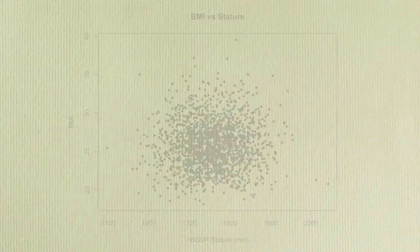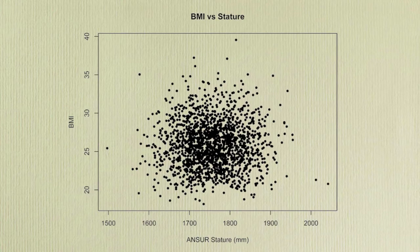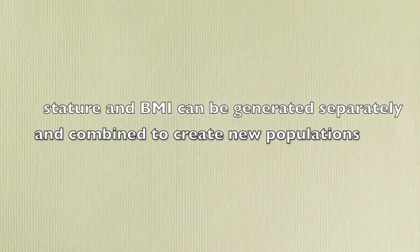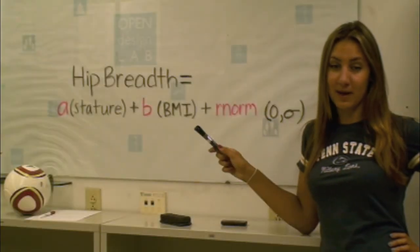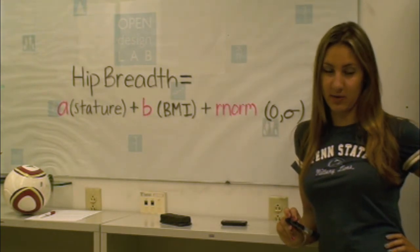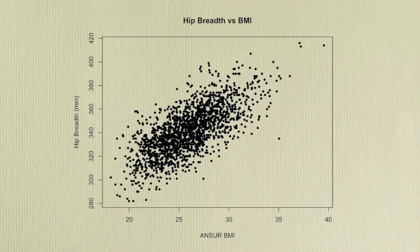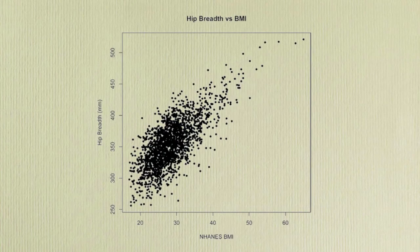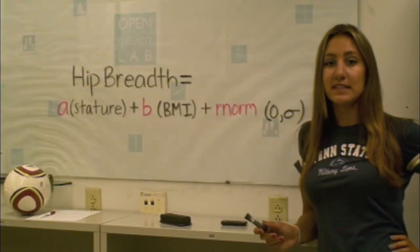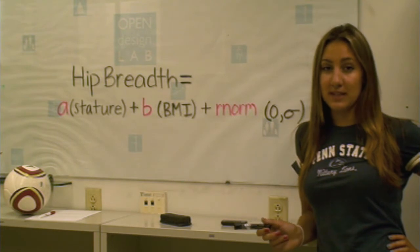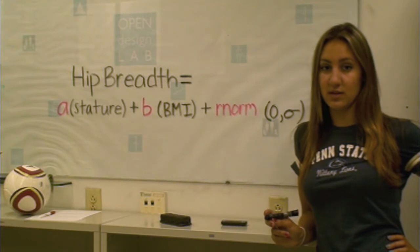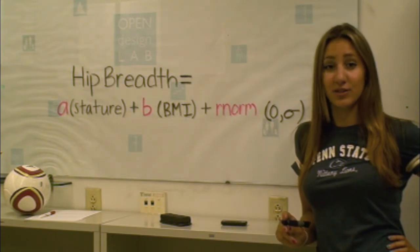For populations where only the anthropometry tables describing the data are available, the stature and BMI data can be generated separately and combined to create new populations. If we include BMI and stature in our regression equation for hip breadth, we can account for 70% of variability. Unfortunately, the ANSWER database is created using a military population and does not have subjects with high BMIs, which are indicators of overweight and obesity. This means that the hip breadths predicted for obese civilians are less likely to be accurate than hip breadths predicted for healthy-weighted individuals, which may be detrimental to their accommodation and resulting designs.